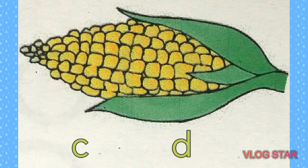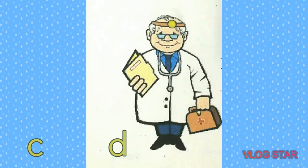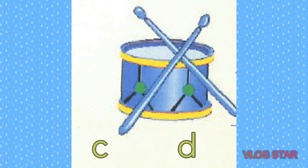Corn — K, K, corn — letter C or letter D? Yes, letter C. Doctor — D, duck, doctor — letter D or letter C? Correct, letter D. Drum — letter D or letter C? D, duck, drum — yes, letter D.